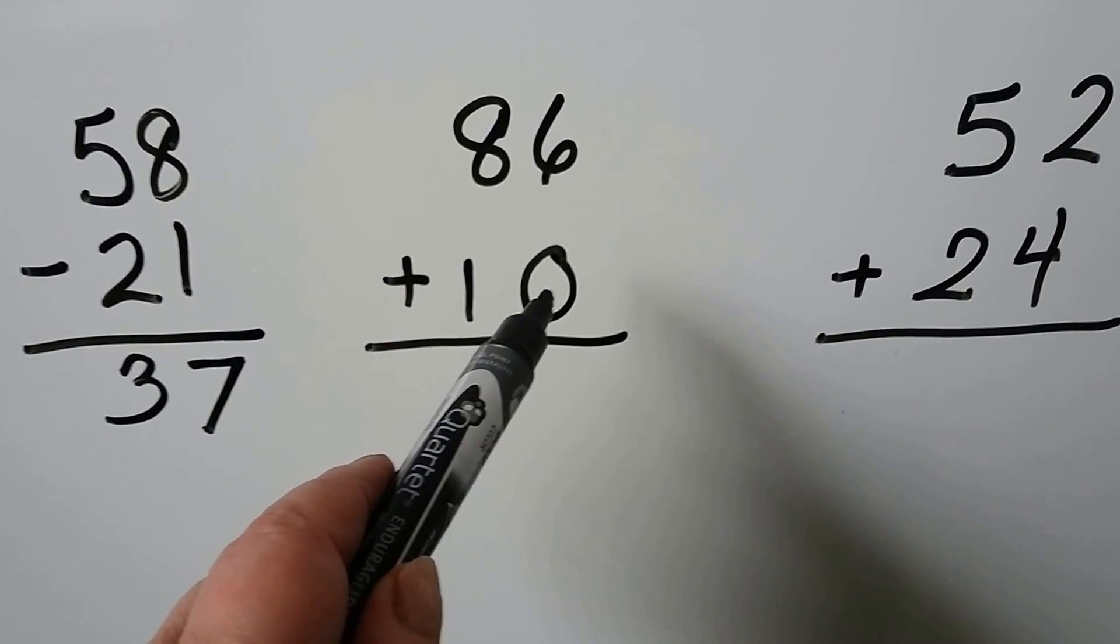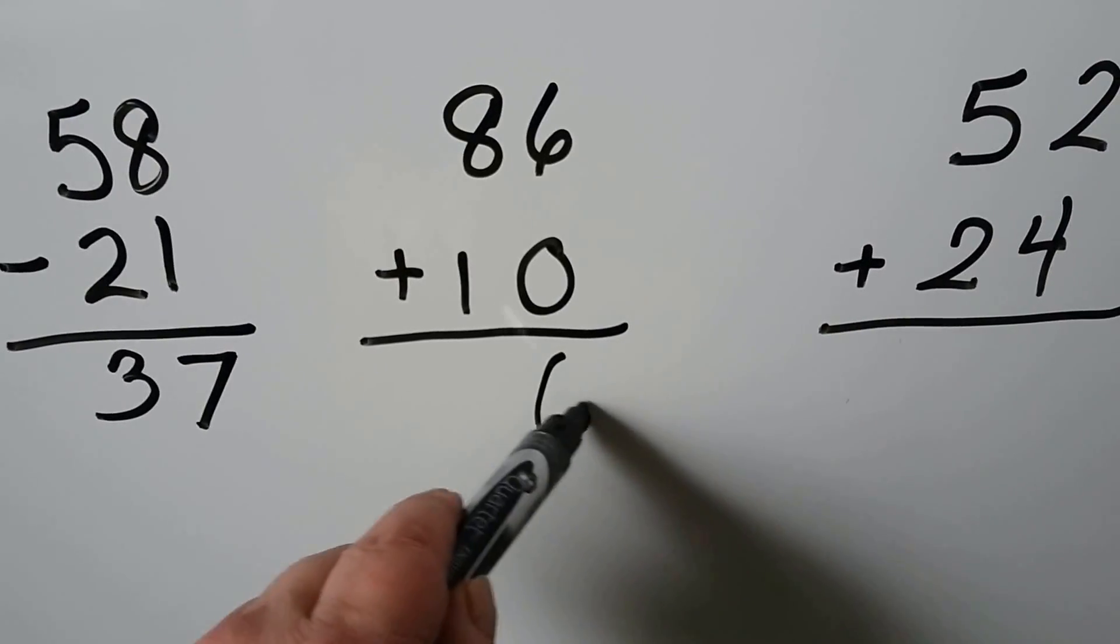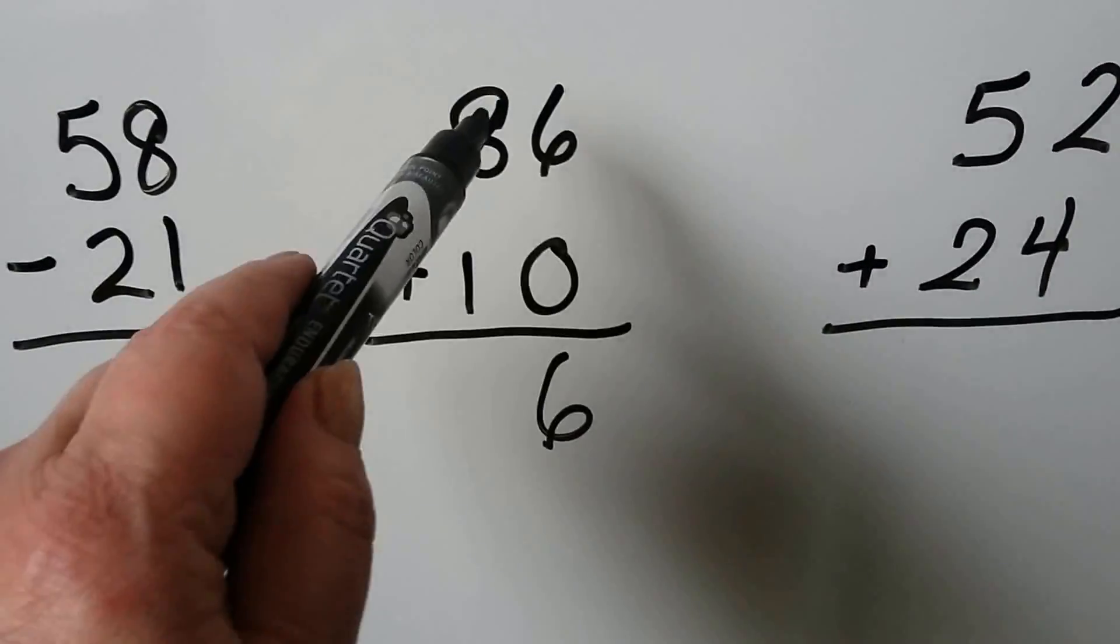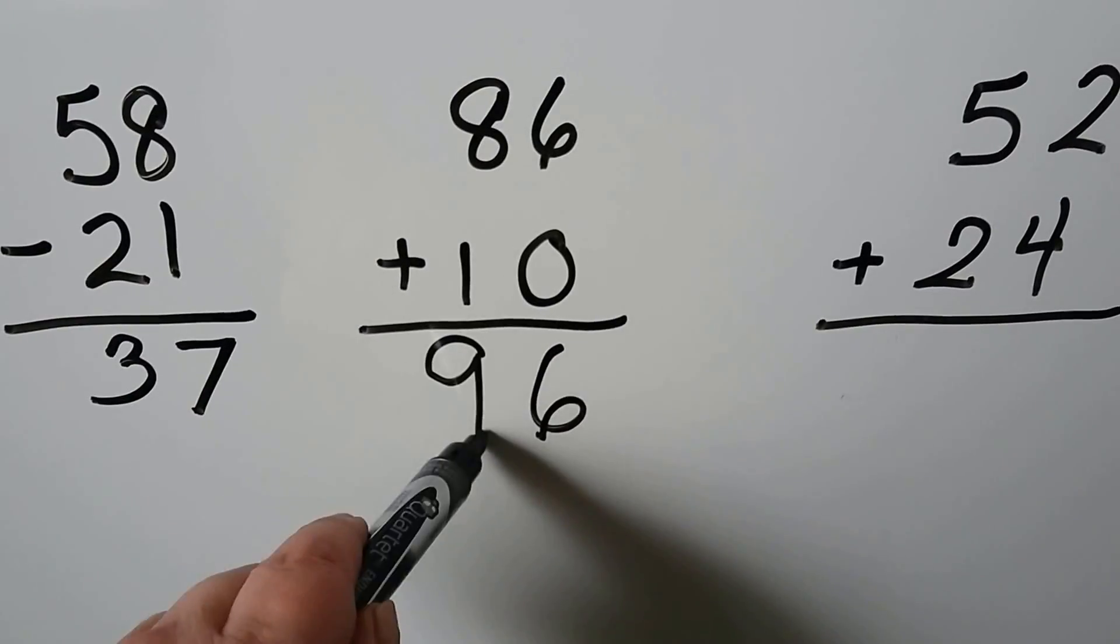6 plus a 0. When we add a 0, the number stays the same. So it's still 6. 8 plus 1 is a 9. We have 96.